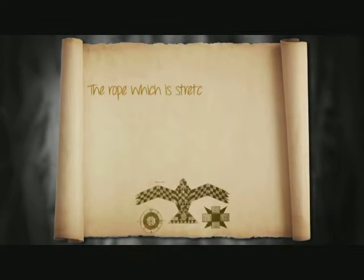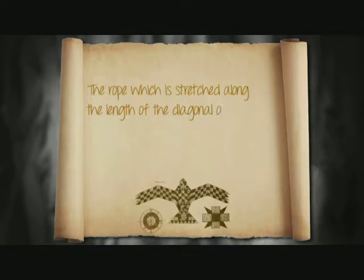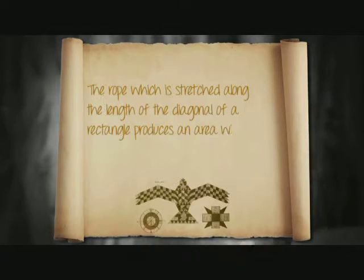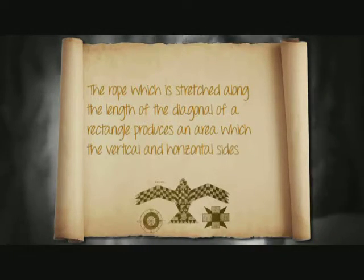So, here's one extract. It says, the rope, which is stretched along the length of the diagonal of a rectangle, produces an area which the vertical and horizontal sides make together.